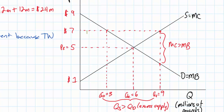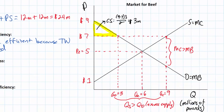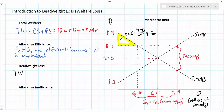To further reinforce this, we can calculate the effect that this over-allocation of resources towards beef has on total welfare by calculating the new areas of consumer and producer surplus. Consumer surplus is now the area above the price of seven dollars and below the demand curve — clearly a much smaller area. Using one half base times height: the height is nine minus seven, the base is three, divided by two, gives us three million dollars. Our new consumer surplus is $3 million, down from $12 million.